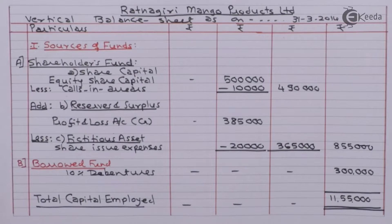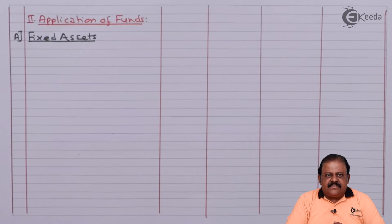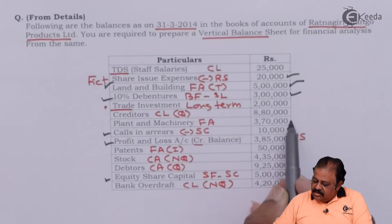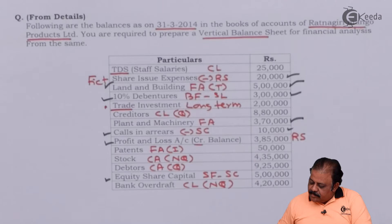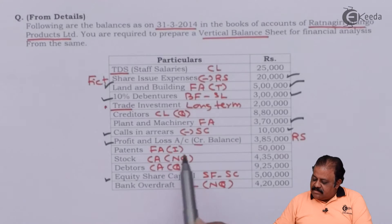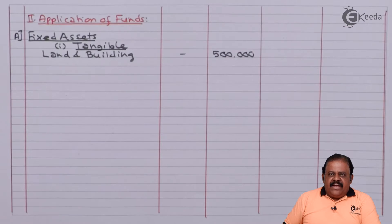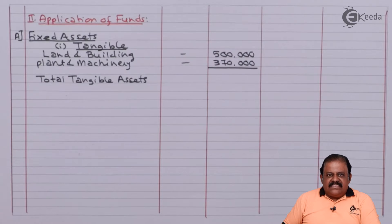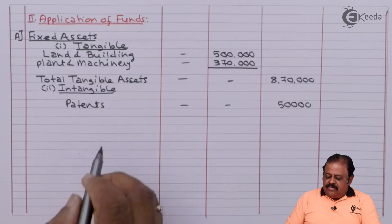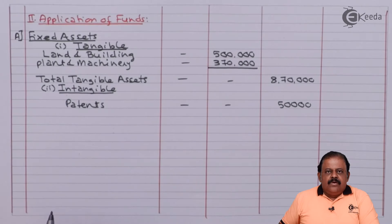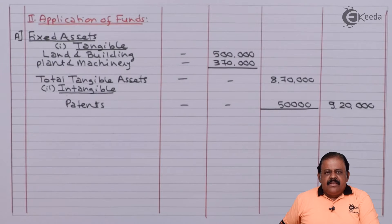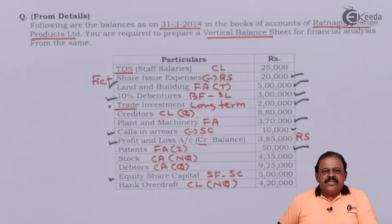In the second part — application of funds — we have first fixed assets. Land and building 5 lakhs, plant and machinery 3 lakhs 70,000, total tangible assets 8 lakhs 70,000. Patents, an intangible fixed asset, 50,000. Total fixed assets come to 9 lakhs 20,000. Next, long-term investments: trade investment is 2 lakhs.